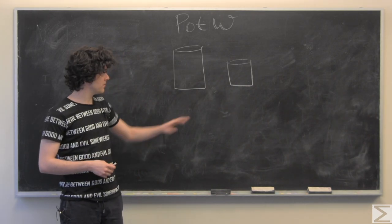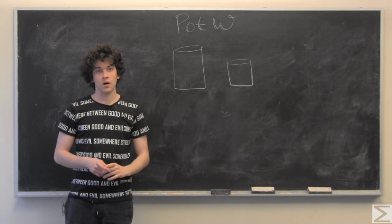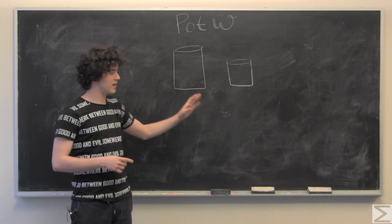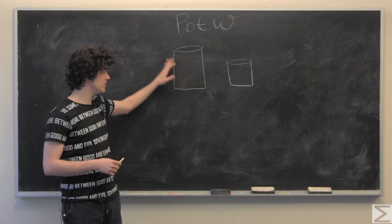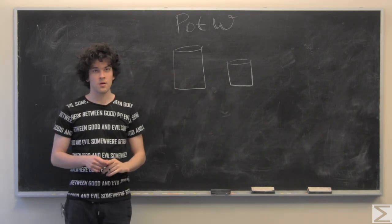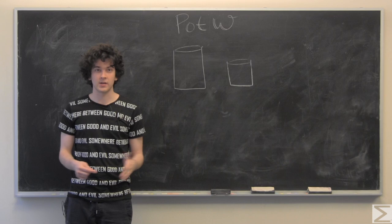So you have two buckets. One holds five gallons, one holds three gallons. And they don't have any markings on the side so you can't just measure out what you want. And we want to get four gallons.